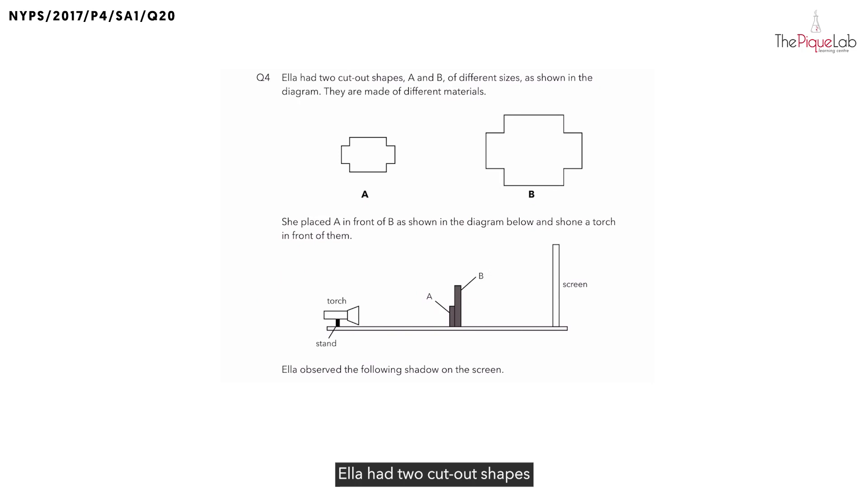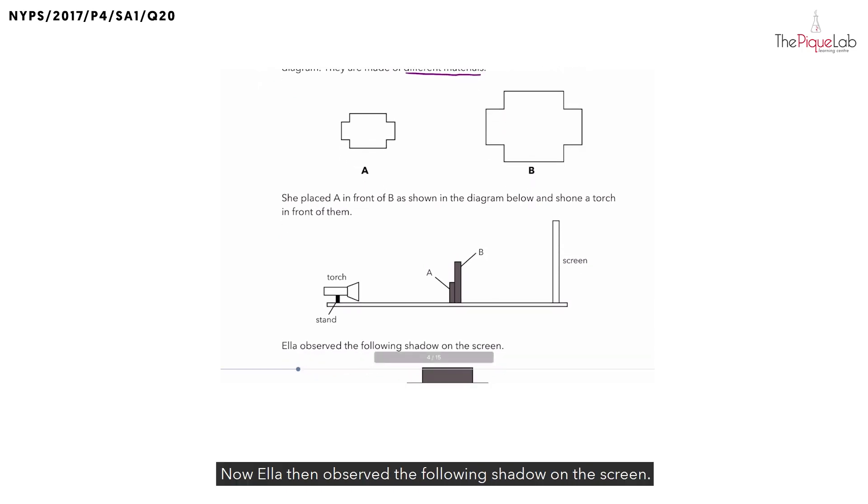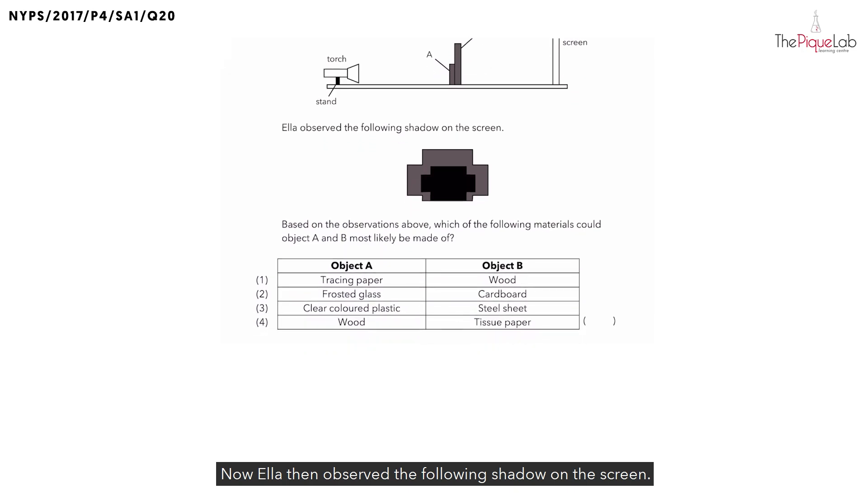Ella had two cutout shapes A and B of different sizes as shown in the diagram and they are made of different materials. She then placed A in front of B as shown in the diagram below and shines a torch in front of them. Ella then observed the following shadow on the screen and based on the observation above, which of the following materials could object A and B most likely be made of.